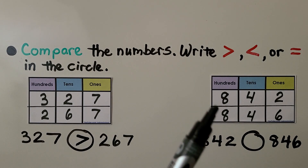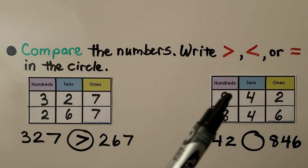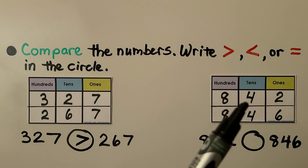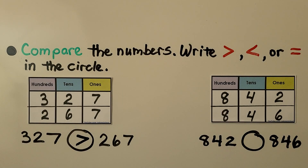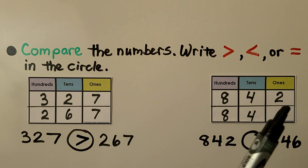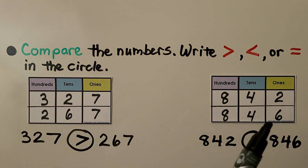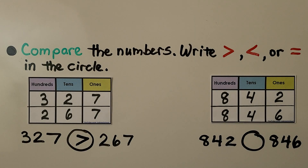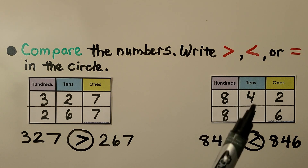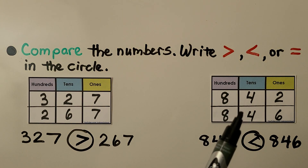Here we have an 8 in both hundreds places, so we move to the tens place to compare. But they both have a 4 in the tens place, so we move again to the ones place to compare. Two ones is less than six ones, so 842 is less than 846. When digits in the hundreds place are the same, we move to the tens place, and if those are the same, we move to the ones place.